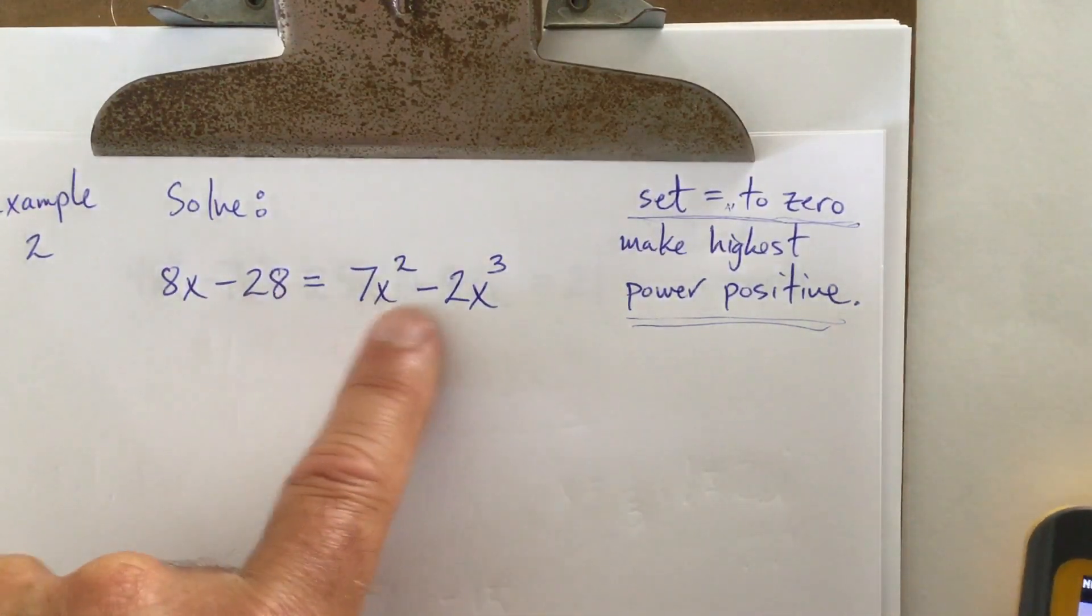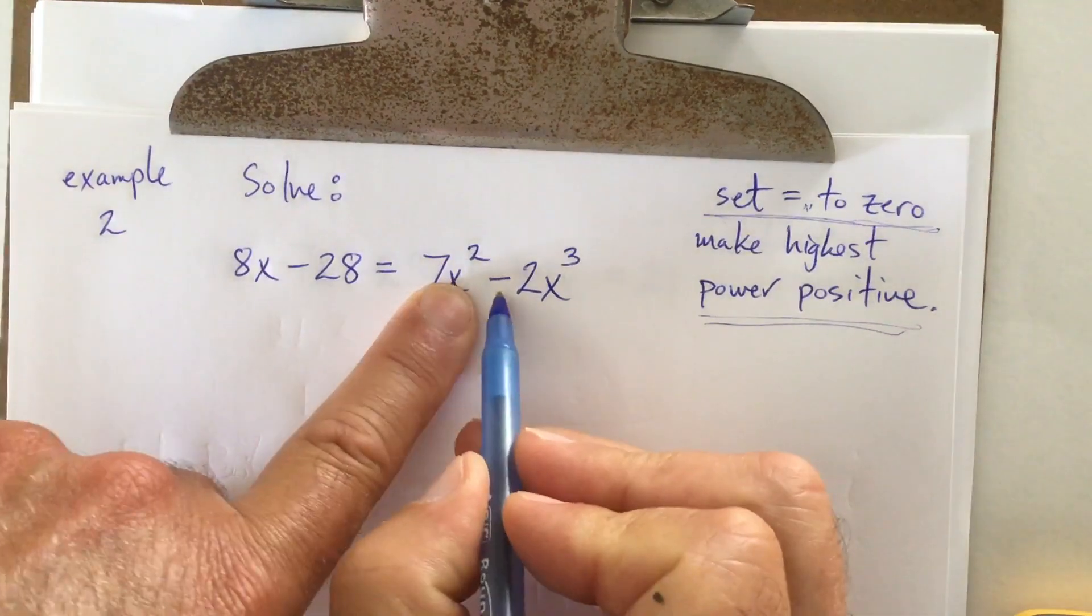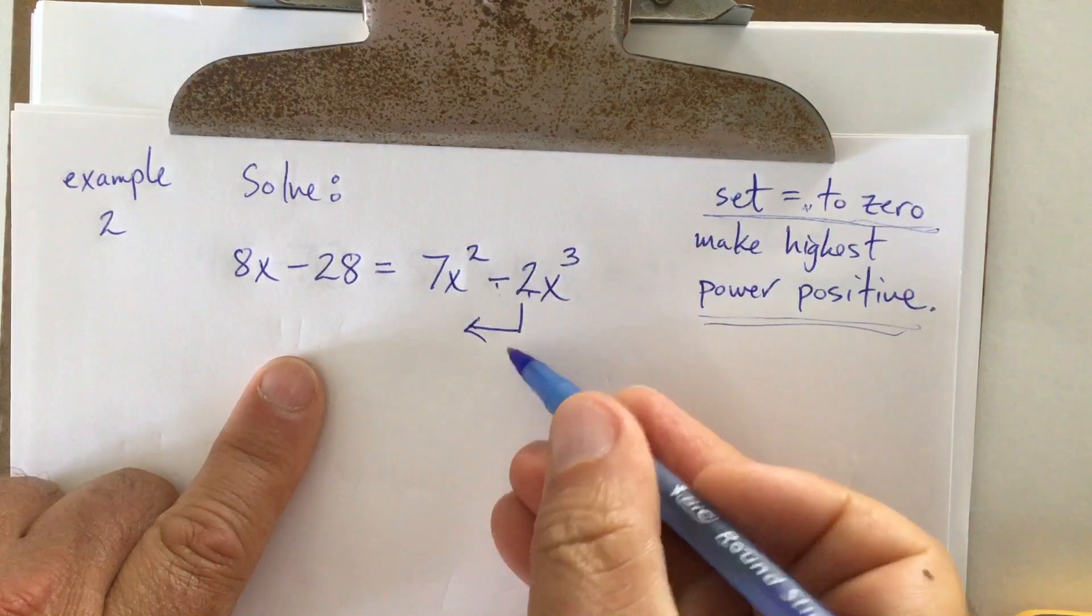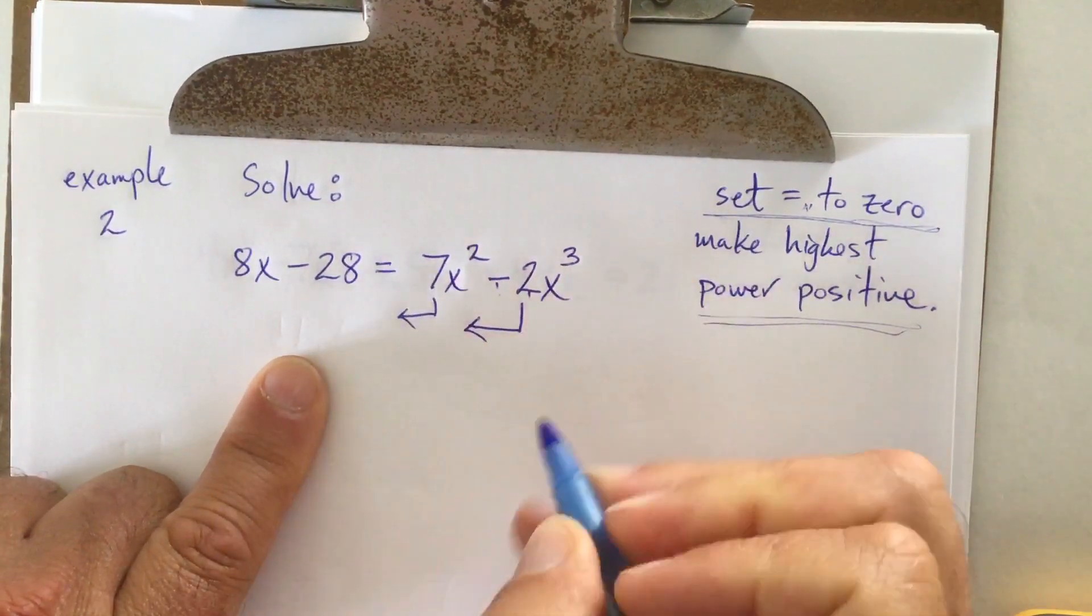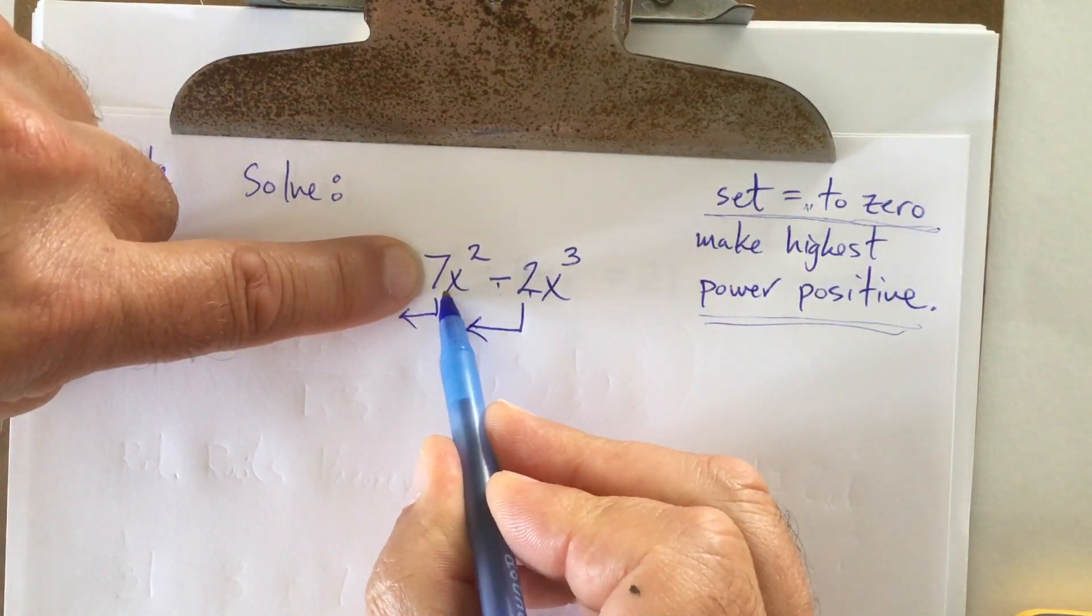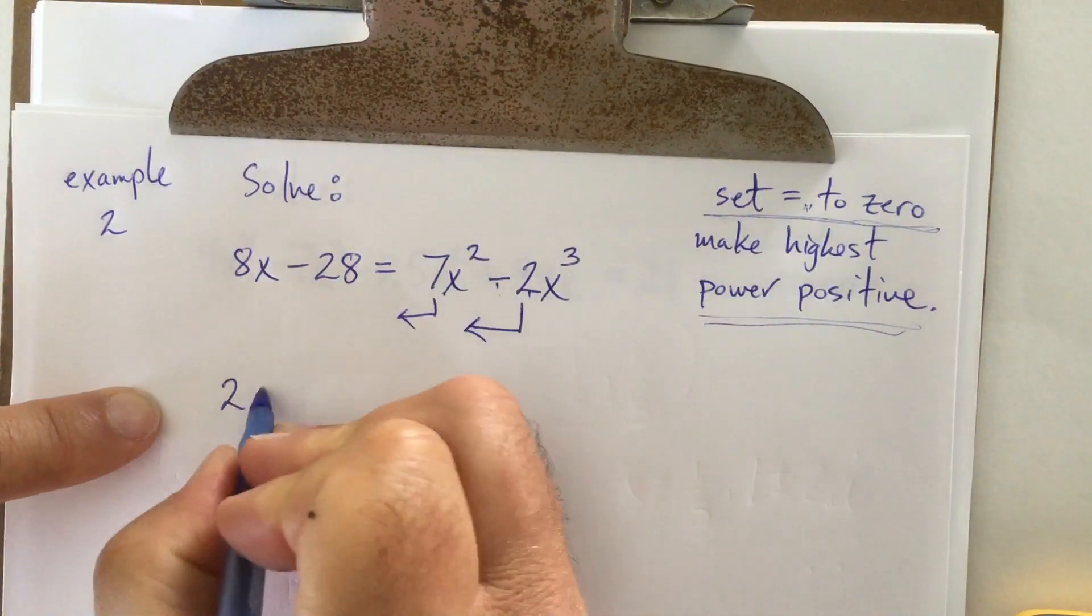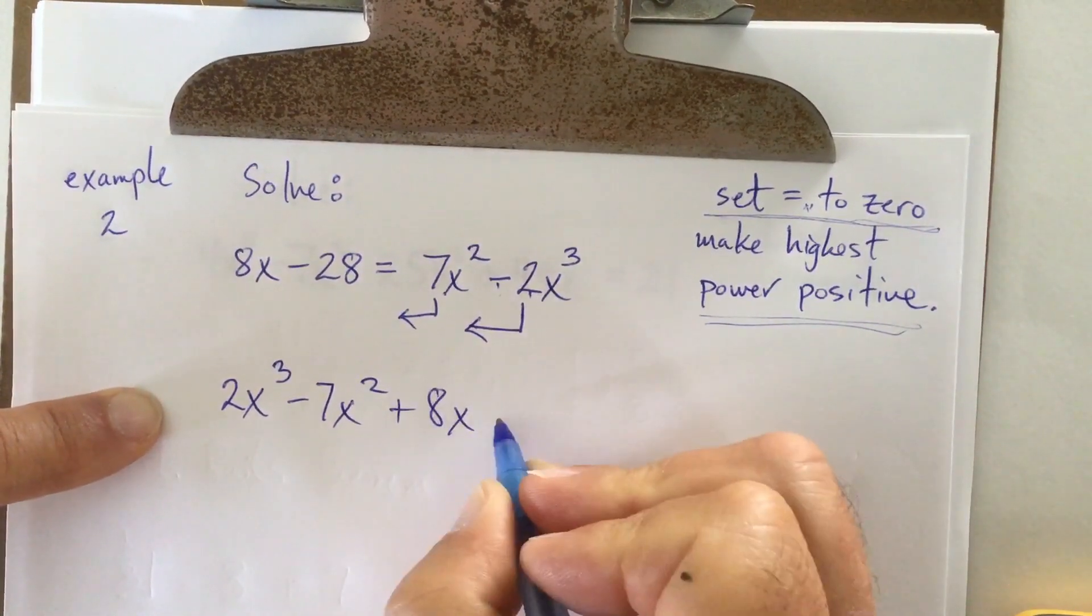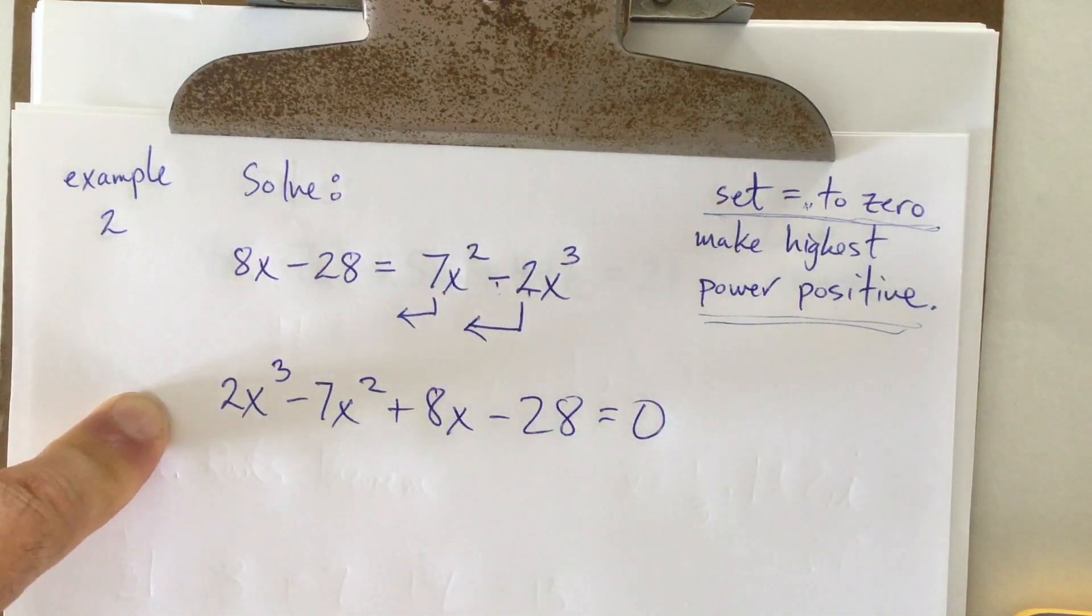So look at this problem, this equation. The highest powered thing in that whole deal is this guy, and he is currently negative. I want to move him to the other side, and that will make him positive. I want to move this guy to the other side. I would have to take away this guy to move him. I would have to add this guy to move him. But if I do that, the result should be this. I get everything on one side, it equals zero. That's what I got.